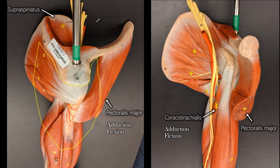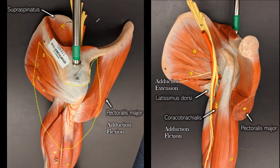Also on the underside is the latissimus dorsi. Because the latissimus dorsi is on the back, it's not going to cause flexion — it's going to cause extension. But because it's still pulling from below, it will still pull the humerus closer to the midline, which would be adduction.